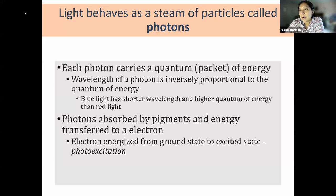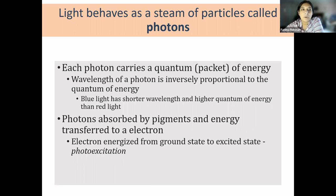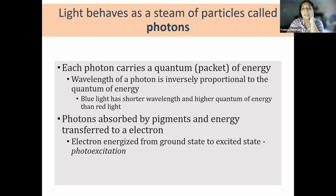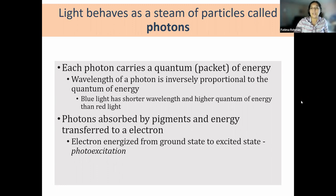Light behaves like the protons being generated in mitochondrial membranes - a stream of particles called photons with packets of energy. How much energy a photon stores is inversely proportional to wavelength: shorter wavelengths have higher quantum of energy than longer wavelengths. The photons are absorbed by pigments associated with whatever wavelength they represent, and that energy is transferred to electrons. Those electrons charged by those photons are excited in the photo excitation stage.